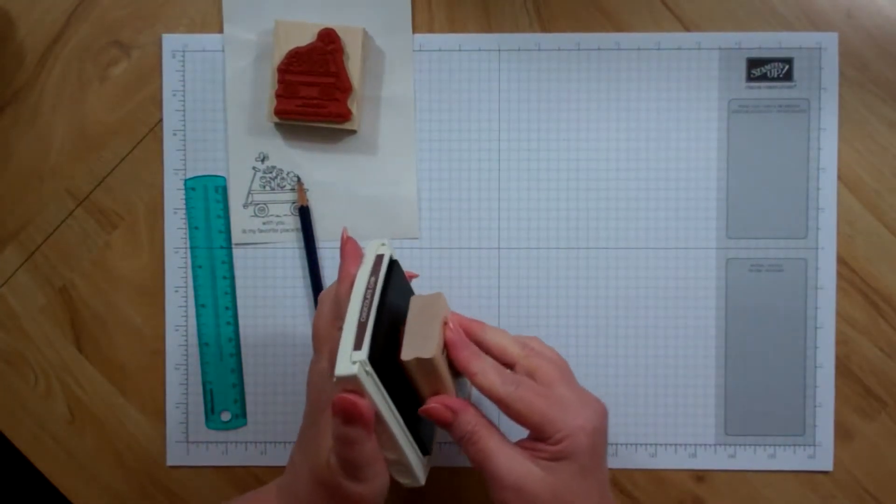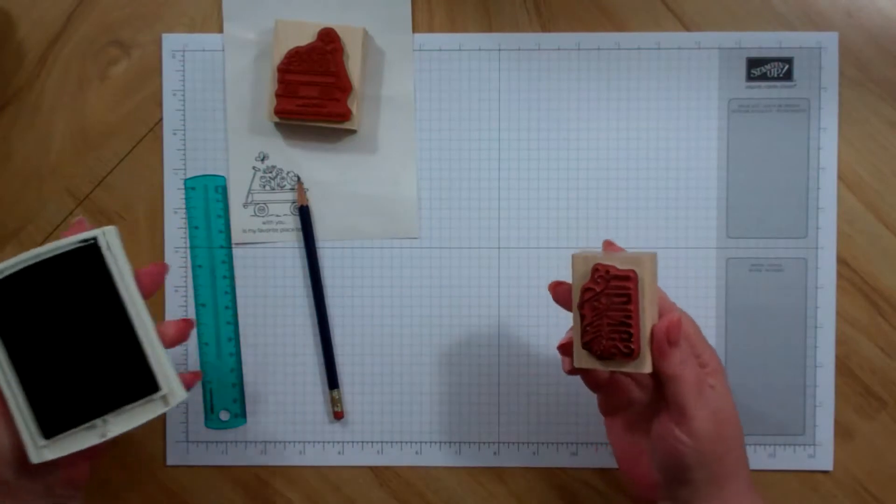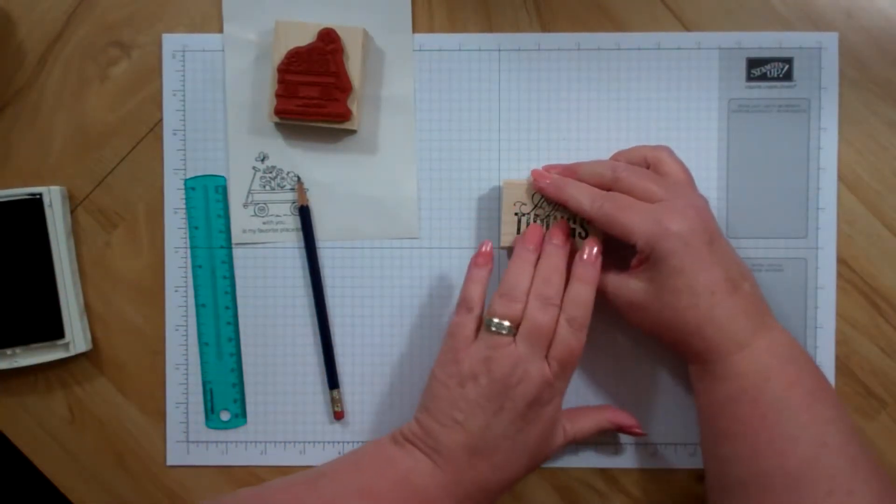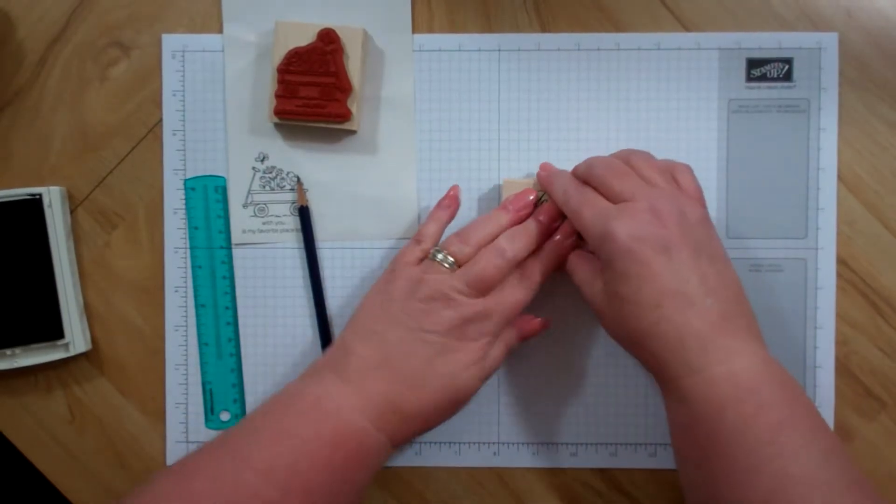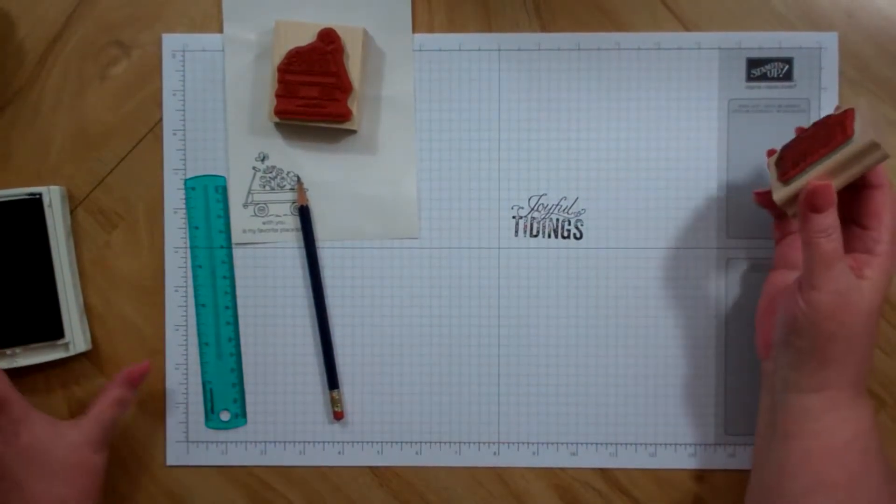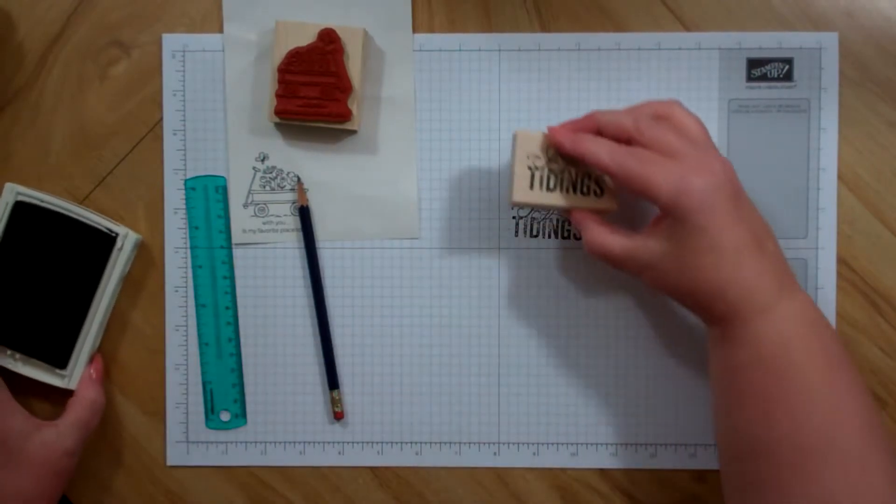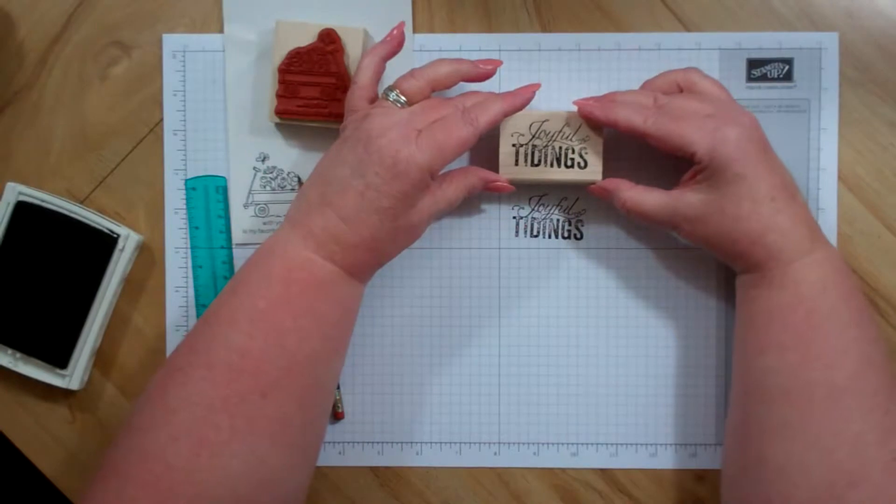Okay, we'll ink up the stamp, and then I'm just going to put it in this corner. I got it a little off. I got it exactly that amount off. So, now I'm going to line it up easier.